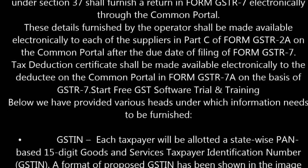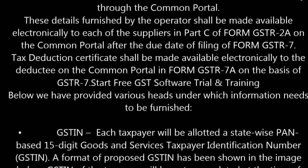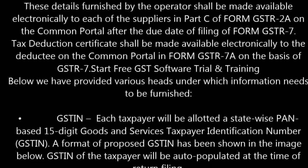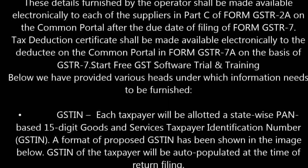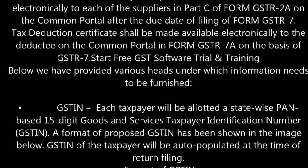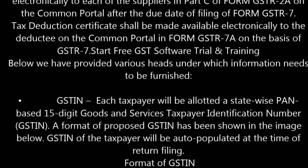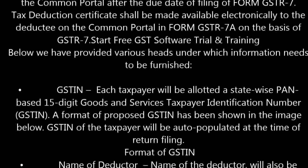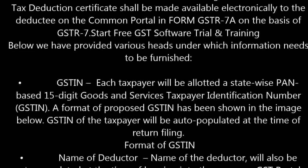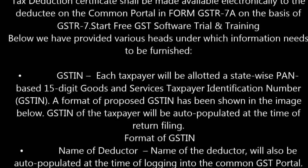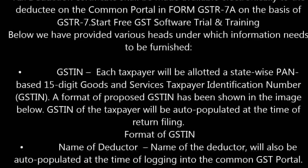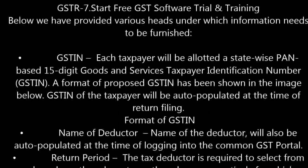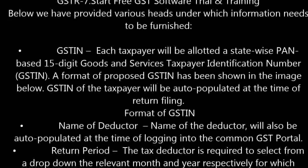Below, we have provided various heads under which information needs to be furnished. Each taxpayer will be allotted a state-wide, PAN-based 15-digit Goods and Services Taxpayer Identification Number (GSTIN). The format of the proposed GSTIN has been shown in the image below. The GSTIN of the taxpayer will be auto-populated at the time of return filing.